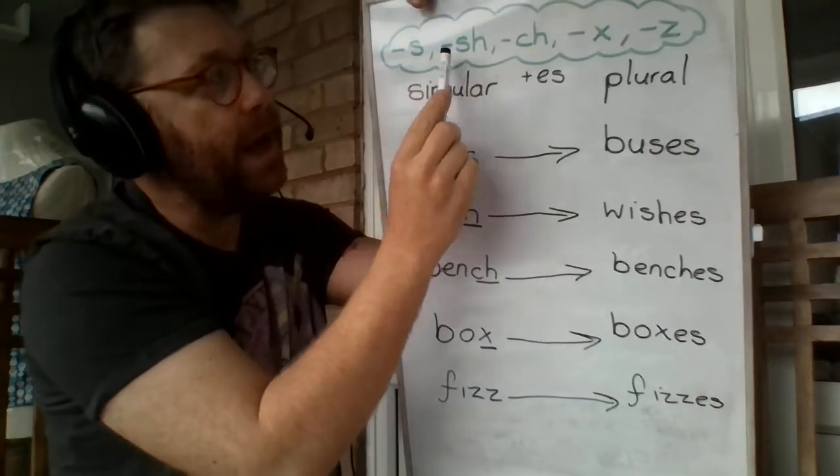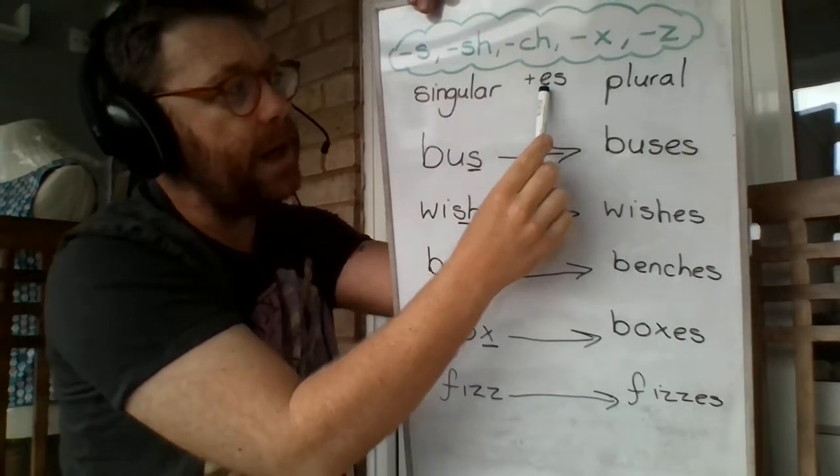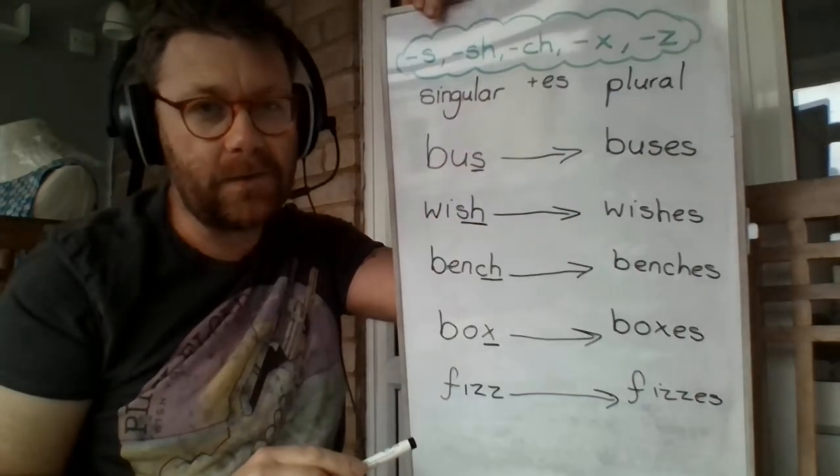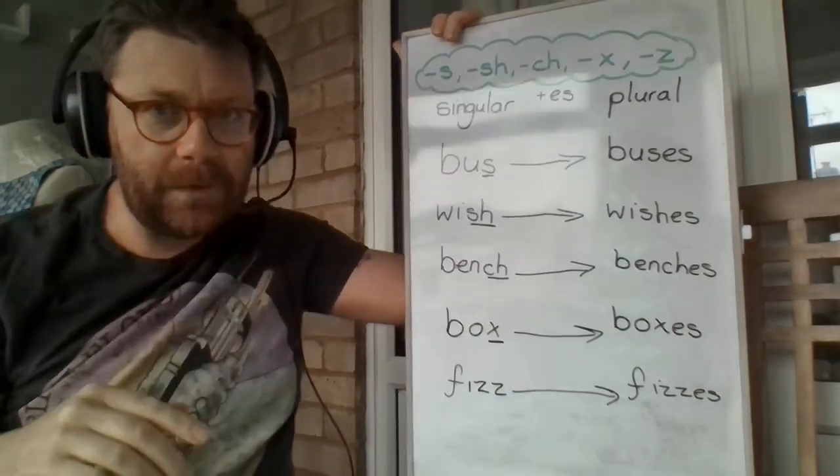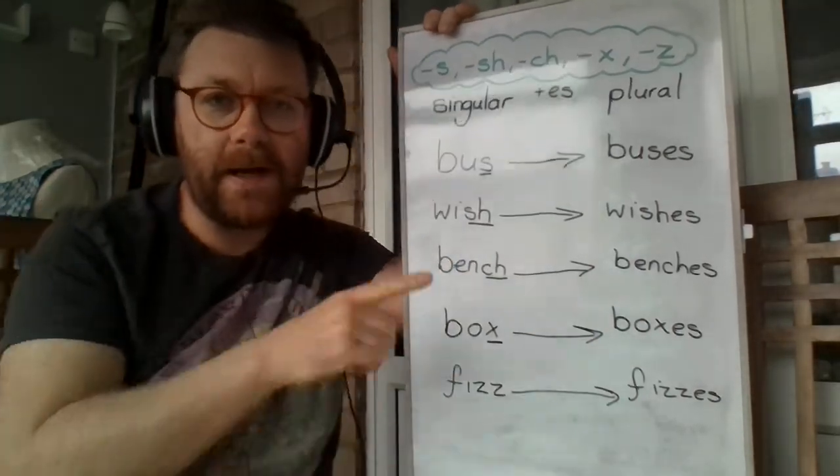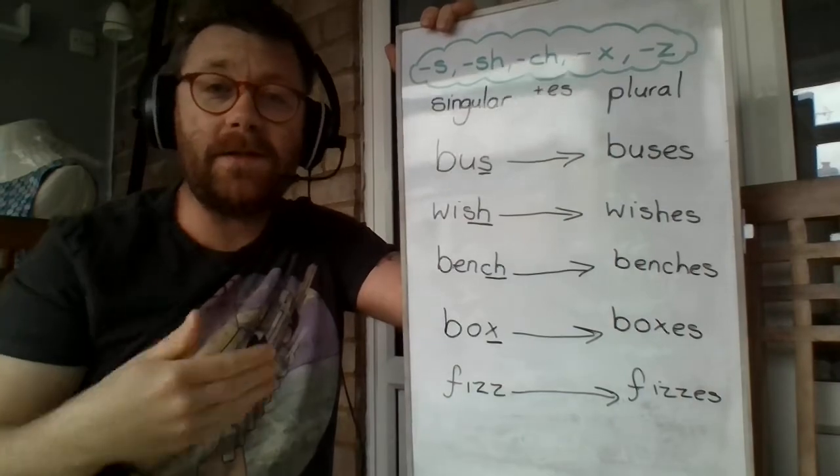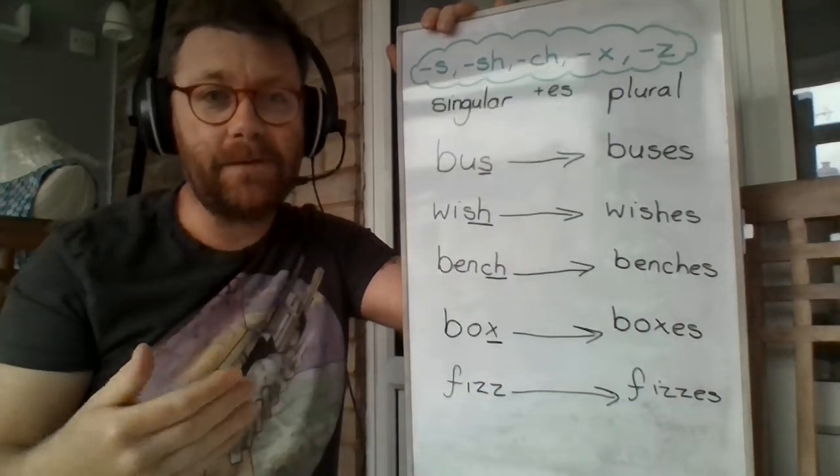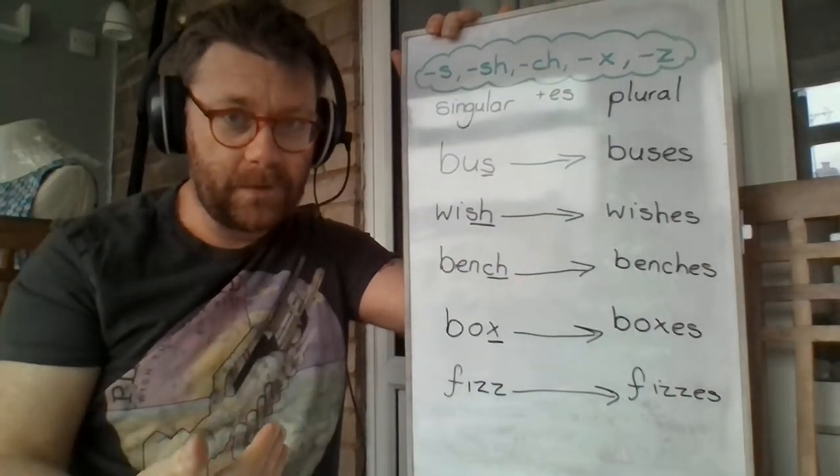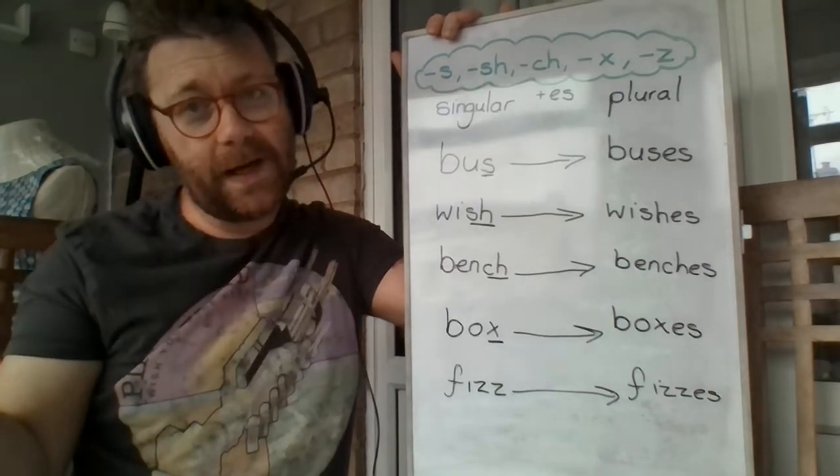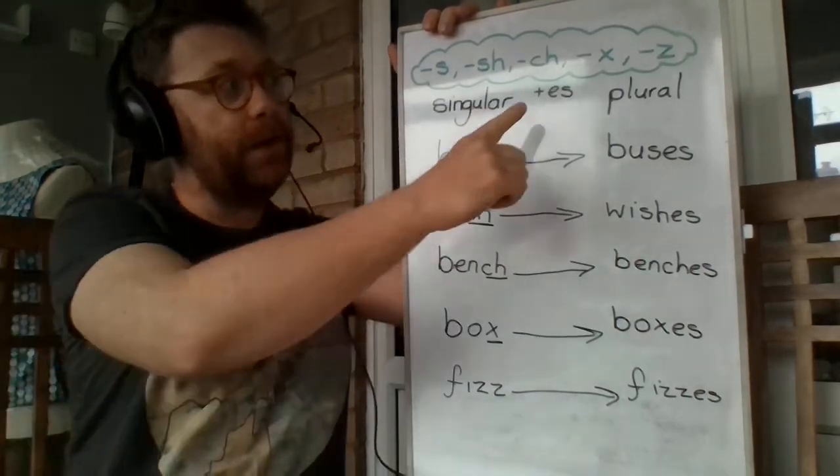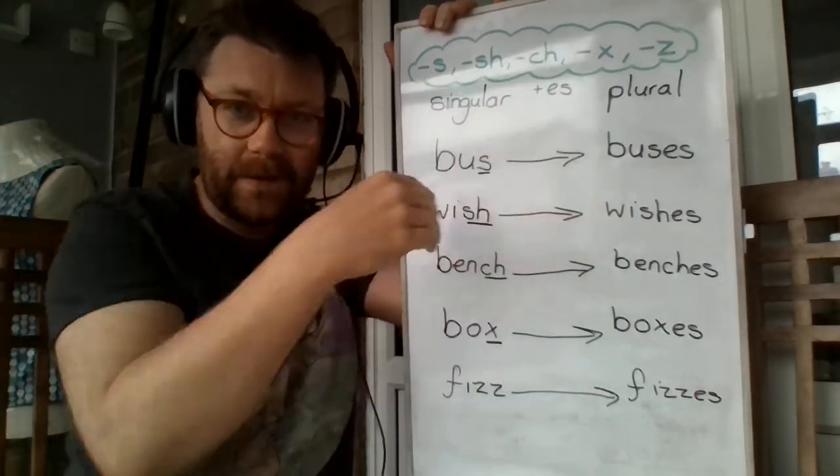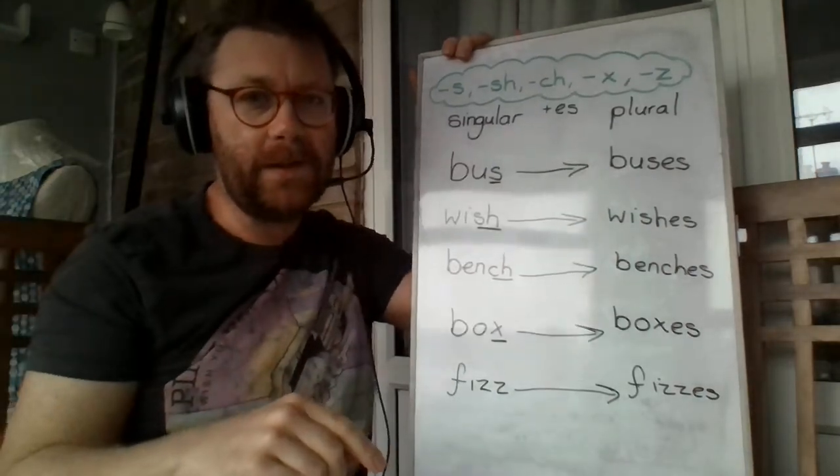All because they end with these sounds up here. So you have to add ES. Now, what I'm going to do is clear my board again. And I'm going to give you some words now to go and have a go at changing from singular into plural. Some of them you'll just have to add S to. Some of them you'll have to add ES to. It's up to you to work out which ones they are.